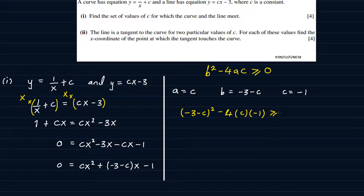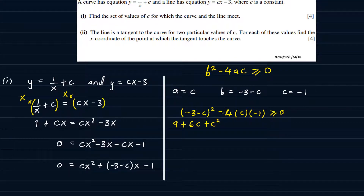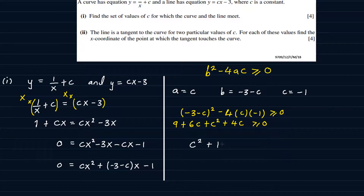This has to be greater than or equal to 0. Expanding the brackets: (−3 − c)² gives 9 + 6c + c², and −4 × c × −1 gives +4c. So we have 9 + 6c + c² + 4c ≥ 0. Simplifying and rearranging, we get c² + 10c + 9 ≥ 0.